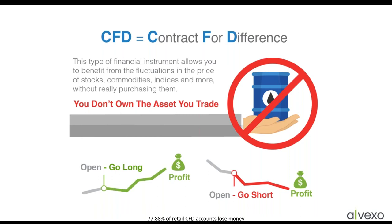When you're trading with Alvexo, you're trading CFDs — contracts for difference. This is a type of financial instrument that allows you to benefit from the fluctuation in price of stocks, commodities, indices, and more without really purchasing them. You do not own the asset. It's a contract between you and Alvexo, or you and whatever broker you're trading with. CFDs are approved and monitored by the regulators, and the price of the CFD mirrors the market price of that asset.